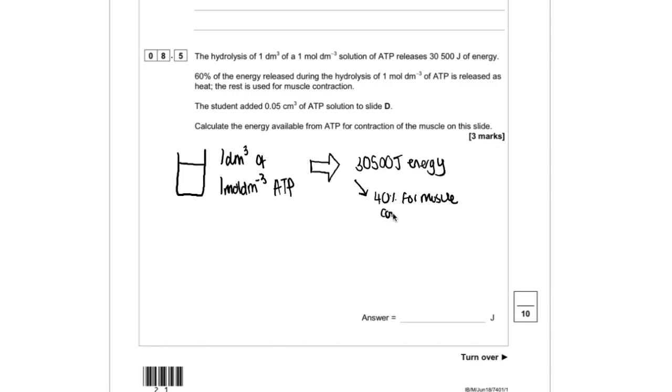So now for our particular example, we've got 0.05 centimetres cubed of ATP solution to slide D. So you can see here that we actually currently don't know what the concentration of ATP is. And we want to work out the amount of energy that's available for contraction of the muscle. So that's this 40%.